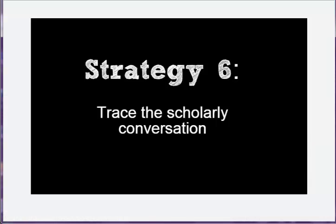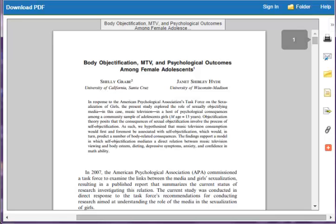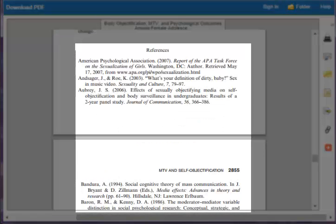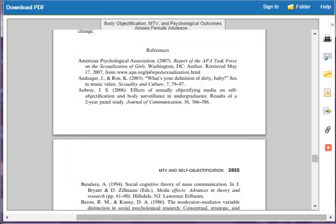Another great way to find information on your topic is to trace the scholarly conversation happening around a particular article. For example, I found this article and it's given me lots of useful information on my topic. By looking at the reference list, I can trace the conversation back and see what sources these authors read which informed and influenced this study.